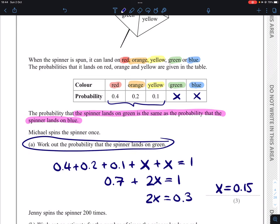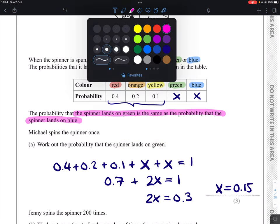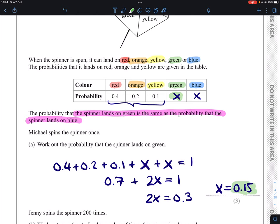And the probability that the spinner lands on green, given that X was that probability, gives us an answer of 0.15. Next part.